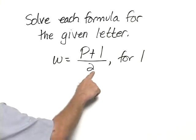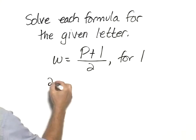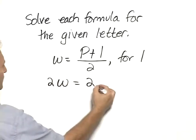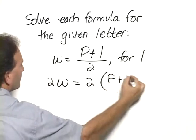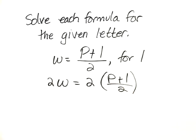Well, the first thing we'll do is multiply both sides by 2. So 2 times W equals 2 times P plus L all over 2.